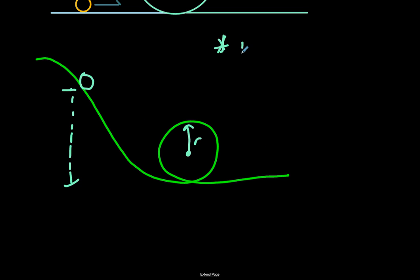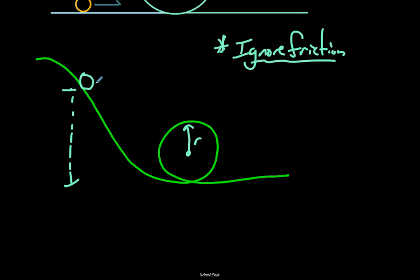A couple of caveats: we're going to ignore friction. In real life you can't do that — if you want to include friction, you can figure it out and add that on, or give yourself a little safety margin by going higher. The idea here is that as the ball rolls down, it gains kinetic energy by losing gravitational potential energy. It has to have enough velocity to roll down, make it up to height 2r, and then continue through the loop. As it goes up the loop it's going to slow down, so we have to make sure it still has enough velocity at the top.